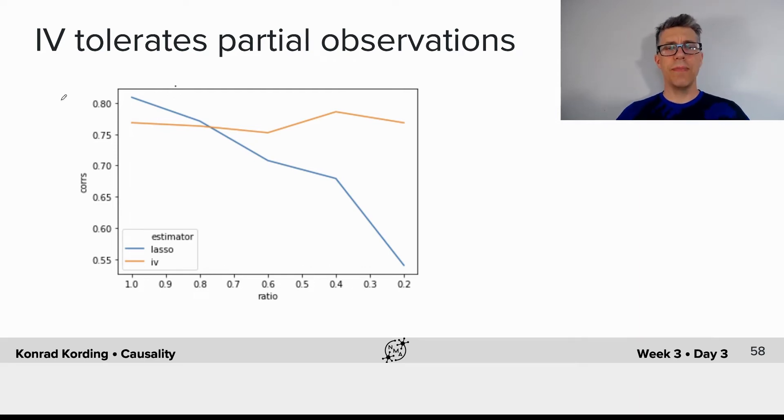So what did we see here? Instrumental variables tolerate very partial observations. In fact, you see, it barely goes down at all, whereas the standard lasso approach here goes down relatively quickly as we only record parts of all the neurons.